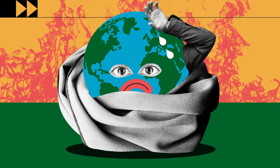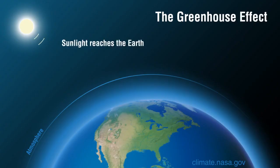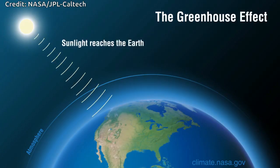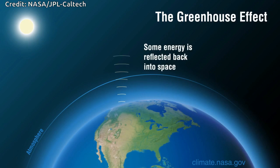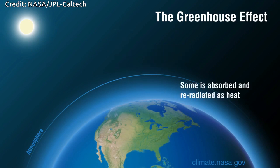primarily due to burning fossil fuels like coal, oil, and gas. Burning fossil fuels generates greenhouse gas emissions that act like a blanket trapped around the Earth, trapping the sun's heat and raising temperatures.